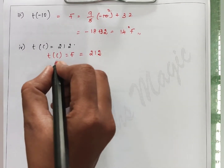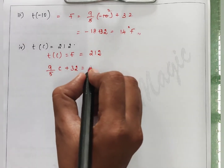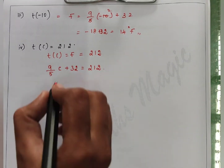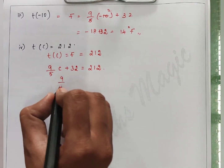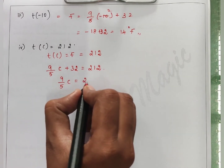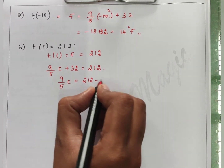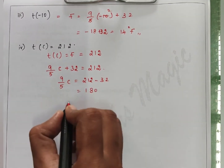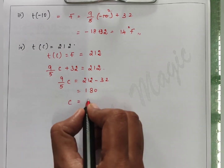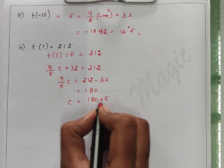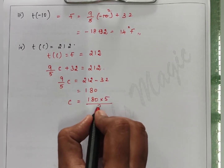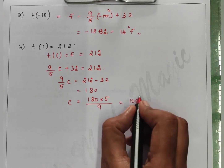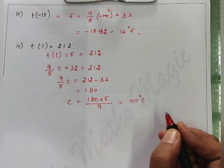32 equals T(C). So 9 by 5 into C equals 212 minus 32. Subtracting gives 180. C equals 180 into 5 divided by 9, which cancels to 100 degrees Celsius.